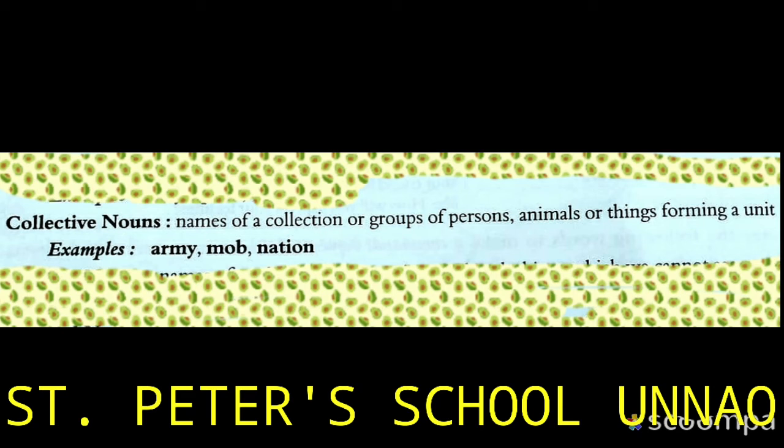Collective nouns cannot be counted. It is a single word but many people or things are in it. Examples include: army, mob, nation. So this is collective noun.